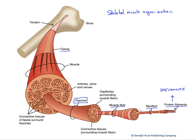Sarcomeres are the individual contractile unit. Within the myofibrils, these sarcomeres are found repeatedly end-to-end. So what we have is bundles of sarcomeres end-to-end adjacent to other myofibrils containing sarcomeres. Those fibers are adjacent to other muscle fibers within the fascicle, and those fascicles are adjacent to other fascicles within the entire muscle — all generating tension.